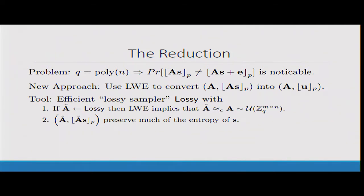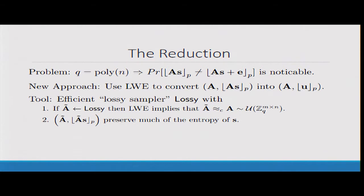The algorithm samples a matrix called A tilde. The first property is that this A tilde is computationally indistinguishable from a uniform matrix A over the same domain, and this holds under the learning with errors assumption. The second property is that if I tell you A tilde and A tilde times some secret vector rounded, this is still gonna preserve a lot of the entropy that was in the secret.